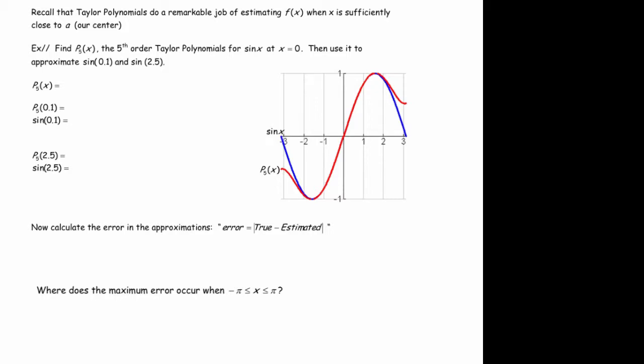We've seen that some of the functions we've been dealing with in this course, such as e to the x and sine of x and cosine of x, can be approximated with polynomials. And those are the Taylor polynomials that are associated with the Taylor series for each of those functions.